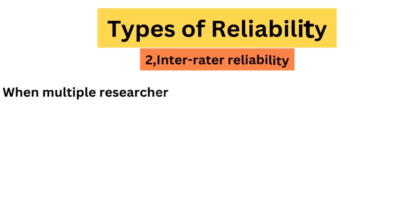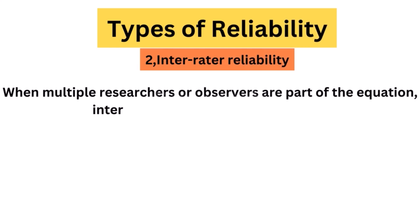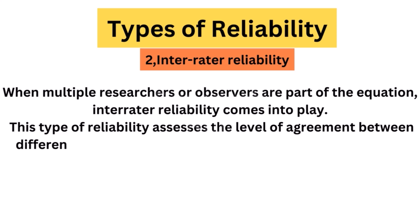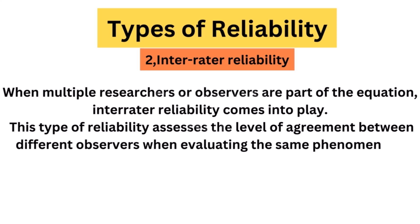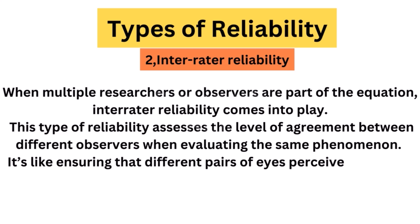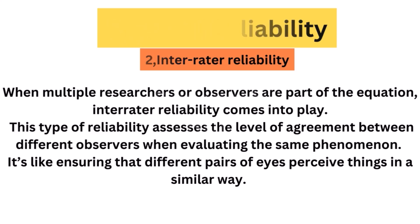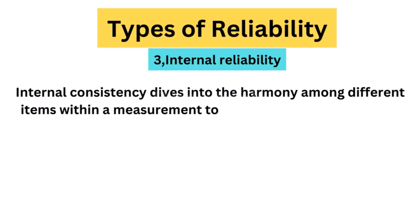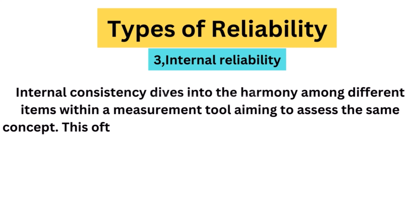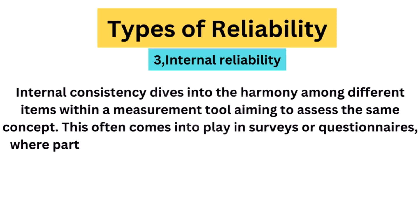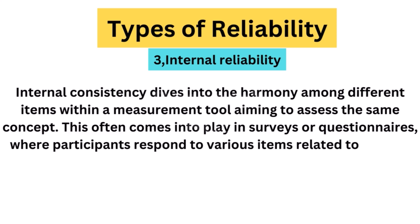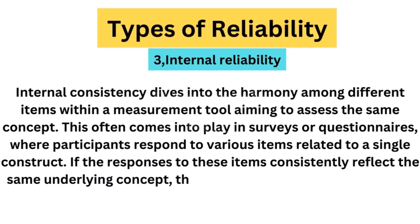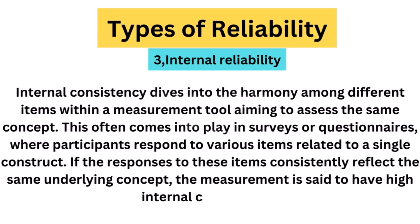Inter-rater reliability: when multiple researchers or observers are part of the equation, inter-rater reliability comes into play. This type of reliability assesses the level of agreement between different observers when evaluating the same phenomenon — it's like ensuring that different pairs of eyes perceive things in a similar way. Internal consistency dives into the harmony among different items within a measurement tool aiming to assess the same concept. This often comes into play in surveys or questionnaires, where participants respond to various items related to a single construct. If the responses consistently reflect the same underlying concept, the measurement has high internal consistency.